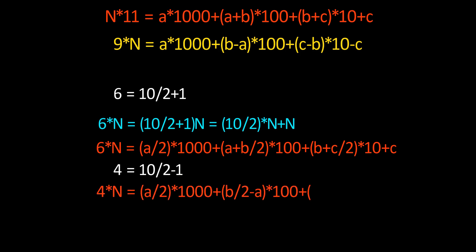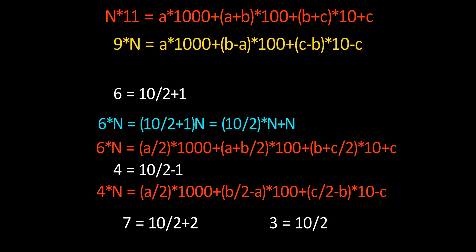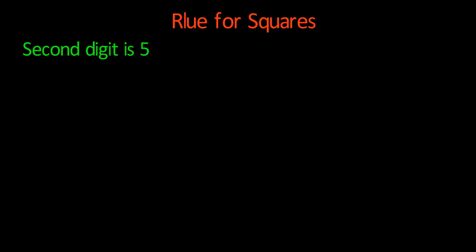Similarly you can find this type of rule for other numbers like 7, 3, etc. There are also some rules for squares. For two-digit numbers whose second digit is 5, we write n equal to a times 10 plus 5 — for example, 35 equals 3 times 10 plus 5. Squaring n gives (a times 10 plus 5) squared.